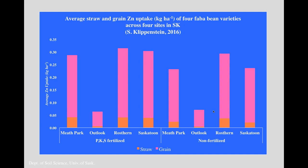Just a brief note on faba beans: work by Sarah Klippenstein in her MSc research at the U of S looked at zinc uptake in kilograms per hectare across four sites in Saskatchewan. Total zinc uptake by faba beans was around 0.3 kg per hectare, or about a quarter of a pound per acre — definitely small, reflecting why they're called micronutrients. Notably, for all sites in the study, the vast majority of the zinc taken up by the faba bean was contained in the grain.